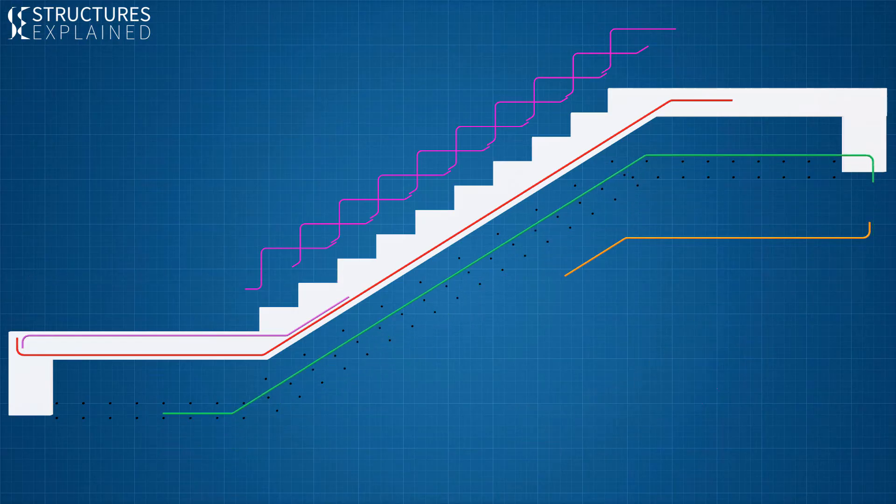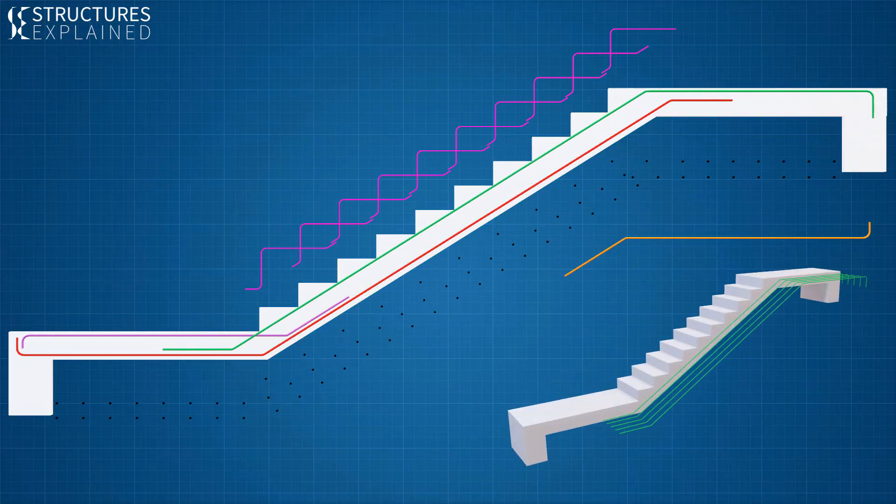The third type of rebar starts from the upper support, runs at top phase of upper landing and stays at top phase of waist slab and merges with bottom phase of lower landing. This bar can be curtailed in waist slab if it is not required in that portion.